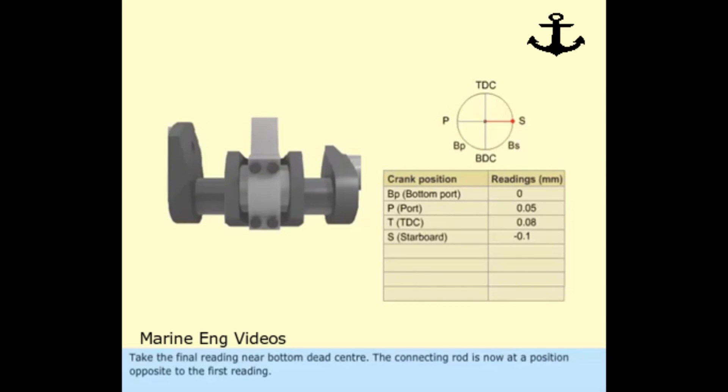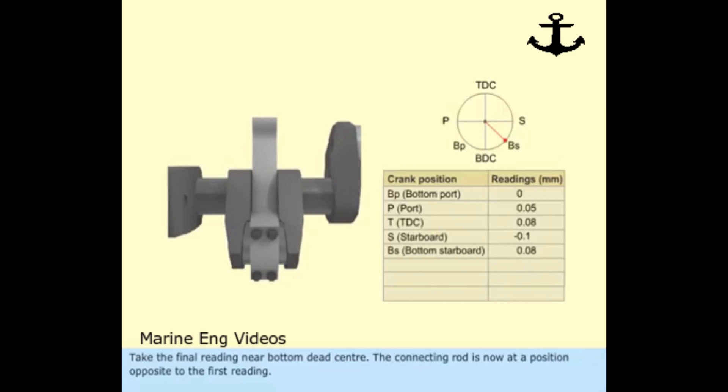Take the final reading near bottom dead center. The connecting rod is now at a position opposite to the first reading. Take the average of the first and last reading to get the approximate bottom position. Repeat the procedure for each unit.